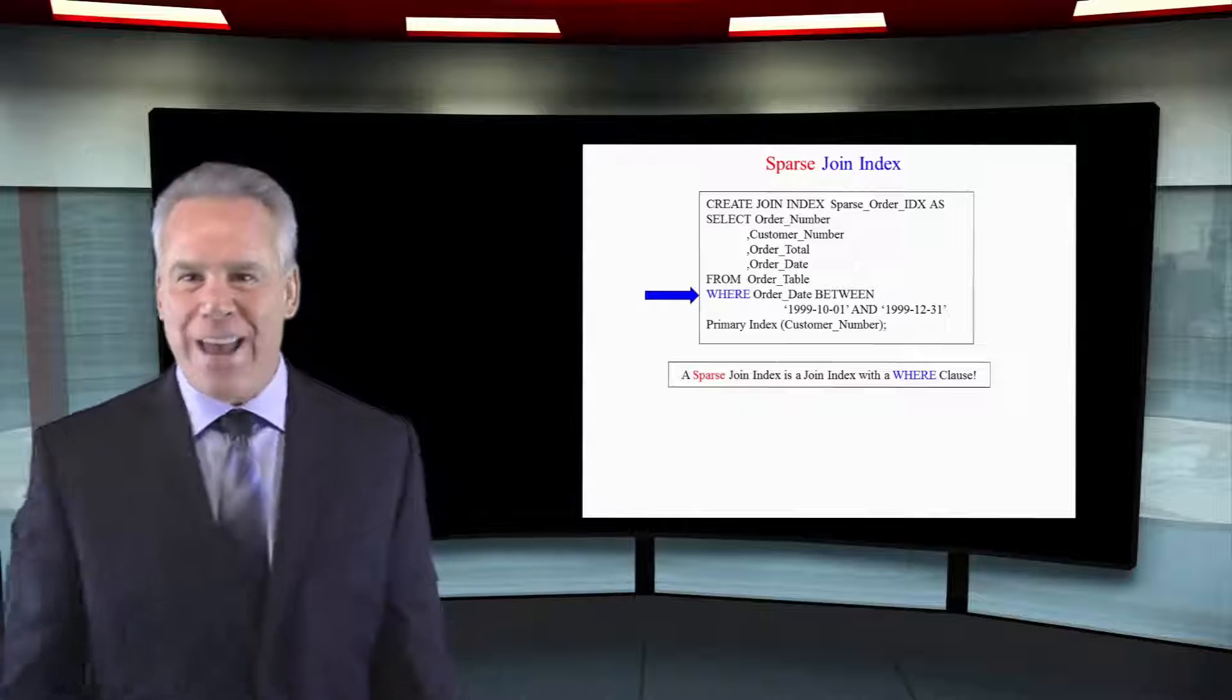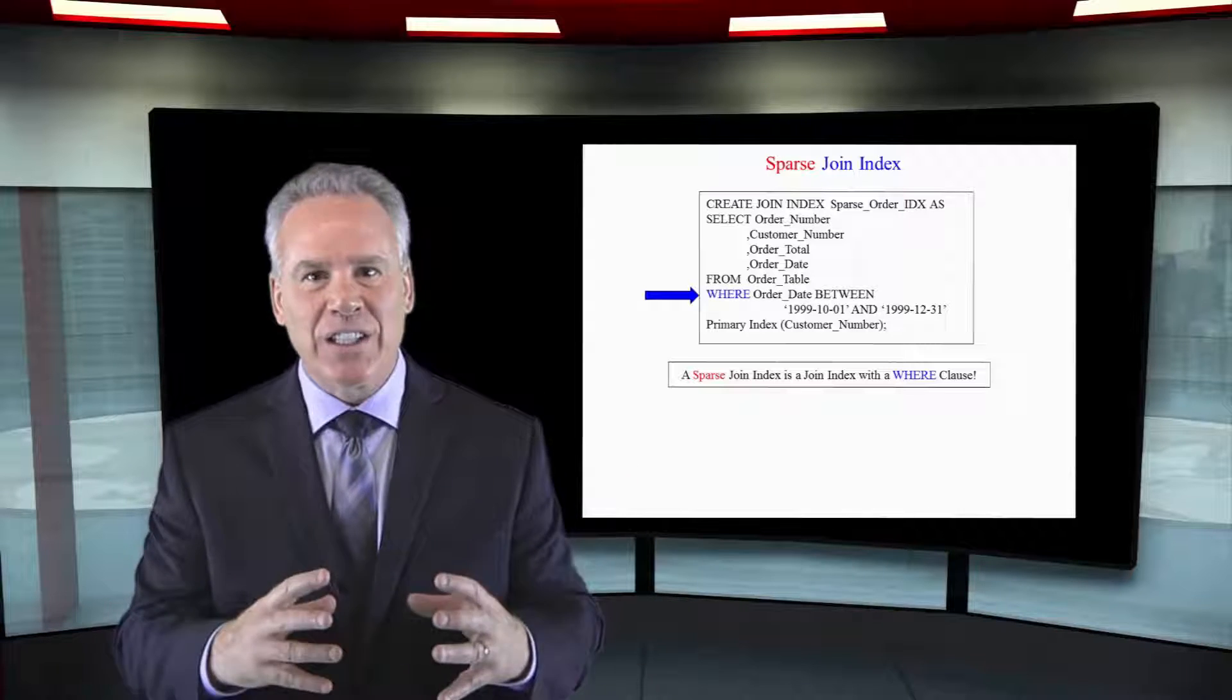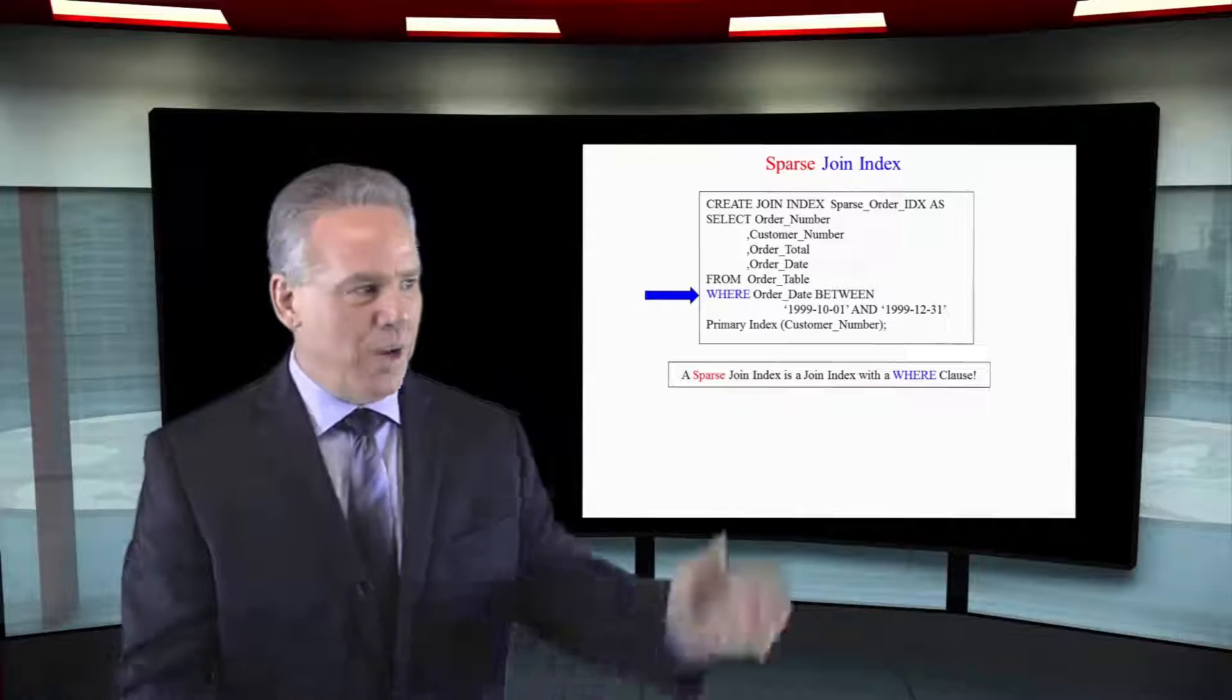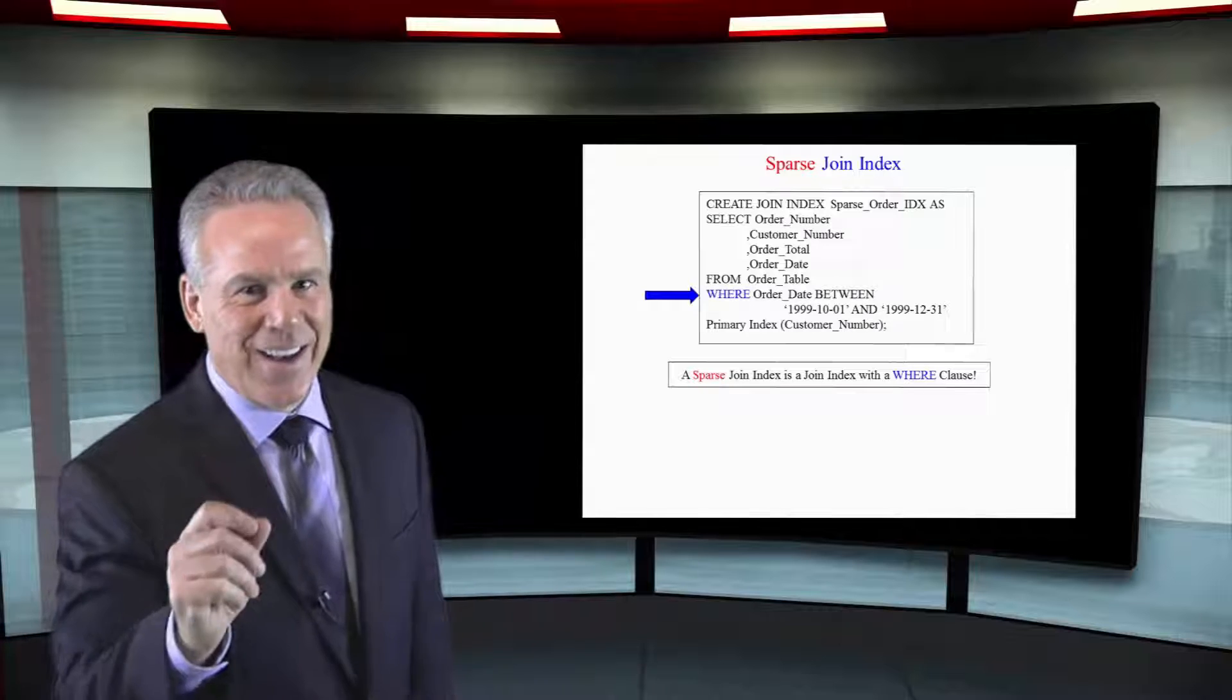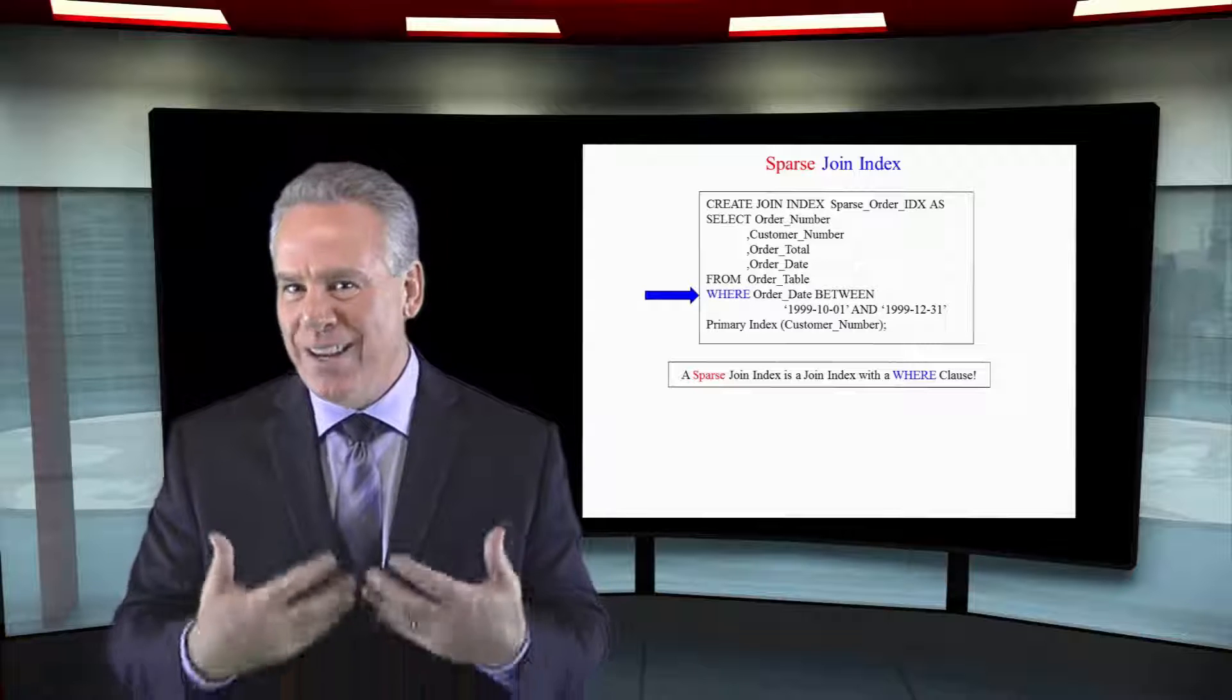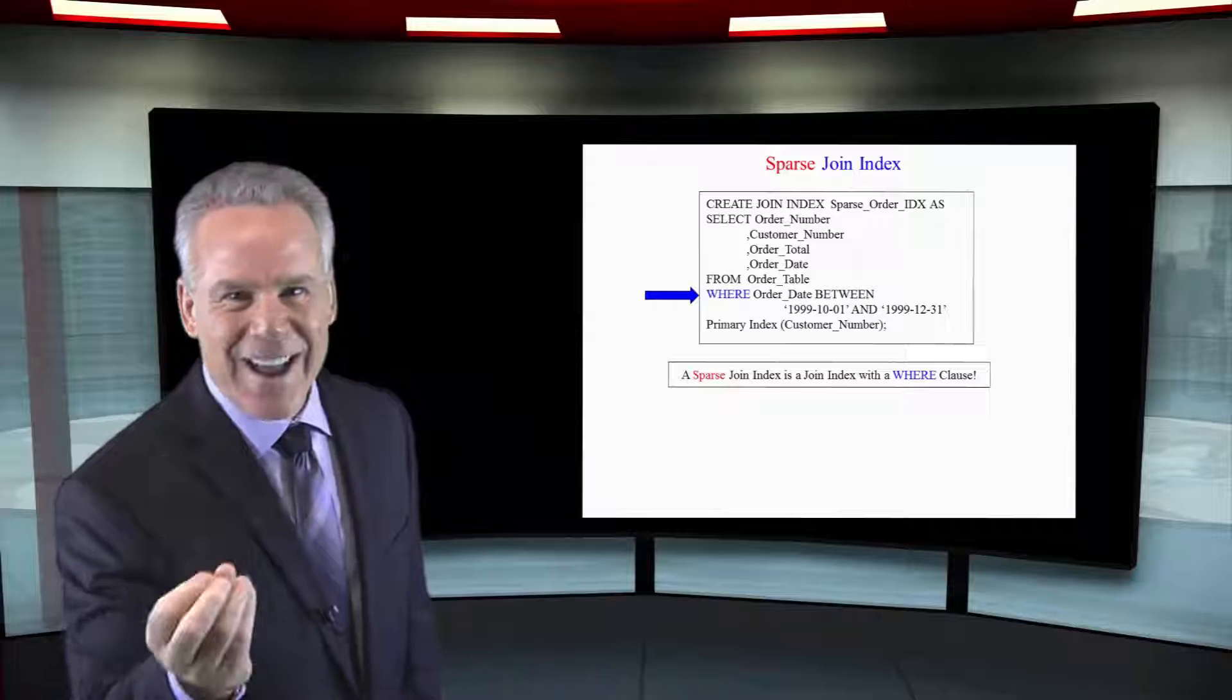But there's some bad news too. You see, it takes up extra physical perm space, so it's using up your space. Plus, whenever data is loaded or inserts, updates, or deletes are done, they've got to also do the same thing to the join index to keep everything current. And this takes more time and overhead.